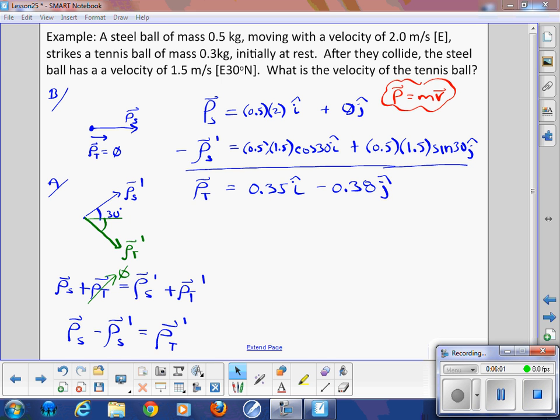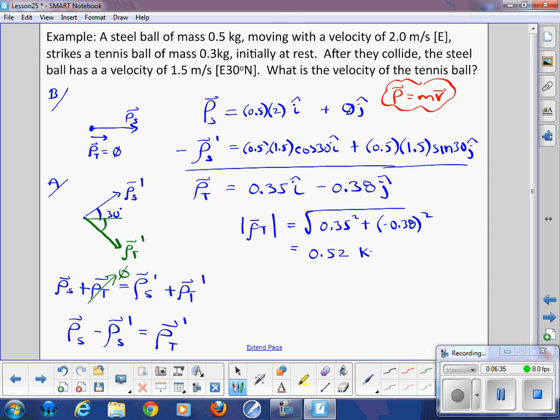So that is the resulting momentum of the tennis ball, which is supported by my intuition. I figured it would be heading off in that direction, positive x, negative y. So now I can determine the magnitude of the momentum. So the magnitude of the momentum of the tennis ball is the square root of 0.35 squared plus negative 0.38 squared. When I do that calculation, I get a magnitude of 0.52 kilogram meters per second. Now I need to find an angle. Actually, I don't really need to find the angle now that I look at it because all I want to know is the velocity. Well, no velocity is a vector. I apologize.